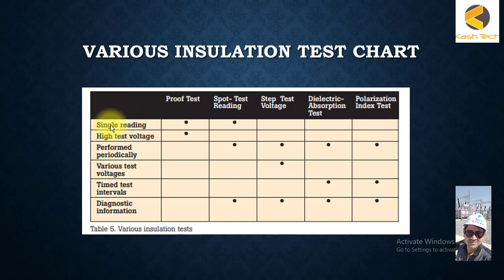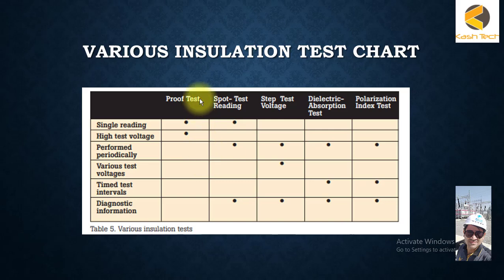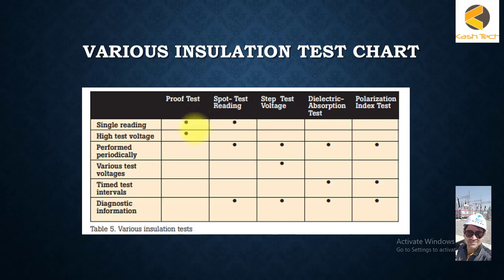The single reading test is done during installation as part of proof testing, and also during maintenance under the name spot test reading. Proof testing is done during installation, while the other four remaining tests are done during maintenance. Single reading is always part of proof testing and is also performed as a maintenance spot test.